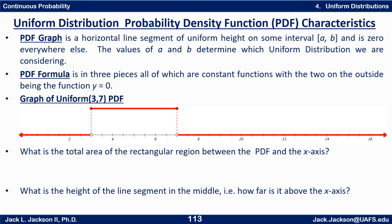So the PDF formula is in three pieces. A piece to the left which is zero, a piece to the right which is zero, and then a piece that's important between a and b. For example, between three and seven we have a horizontal piece. So really you only need to consider what's happening between three and seven. There is no probability, or a probability of zero, outside of that interval.